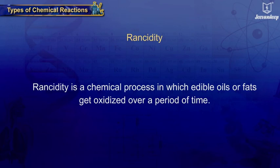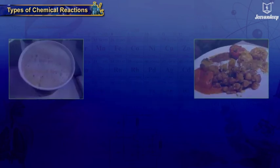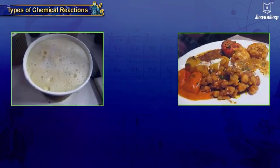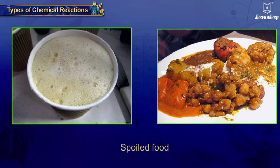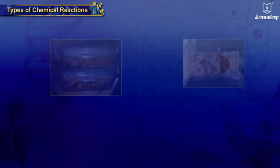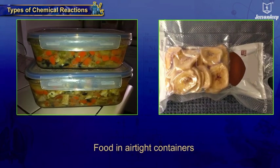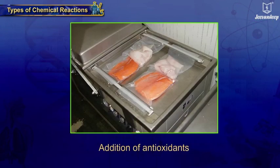Steel is an alloy — a mixture of nickel, chromium, carbon, and iron — and as it is not pure iron, it does not rust. Rancidity is a chemical process in which edible oils or fats get oxidized over a period of time, acquiring a foul odor, taste, or froth. Storage of food in airtight containers or addition of antioxidants prevents oxidation and thus rancidity.